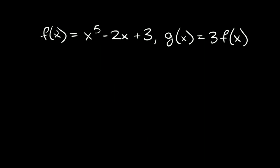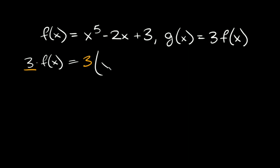Here we're given that f of x is equal to x to the fifth minus two x plus three, and g of x is equal to three f of x — in other words, three times f of x. So that's how we're going to replace f of x. So instead of f of x, we have three times f of x.